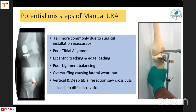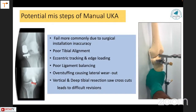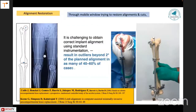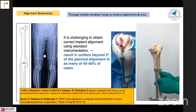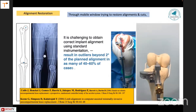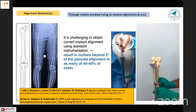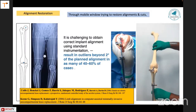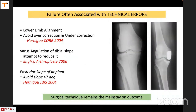Not everybody can reproduce the vertical deep tibial resection — it is very technically challenging as free-hand surgery. Studies show that through a mobile window, trying to restore alignments and cuts is not easy. Outliers of more than 40 to 60 percent — more than two degrees — occur when using manual instruments, trying to see the alignment of the entire limb through a window. Studies have proven that failures are often due to technical errors.